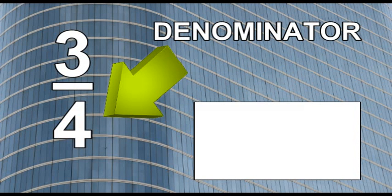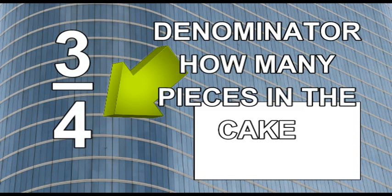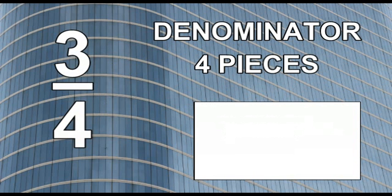When modeling a fraction, you want to start by looking at the denominator. The denominator tells you how many pieces your cake will be cut up into. In this example, our cake will be cut up into four pieces. Since the denominator is four and it's even, let's cut the cake in half. Our cake now has two pieces, but we need four pieces.